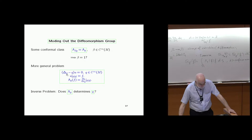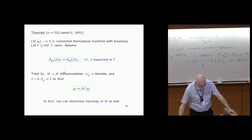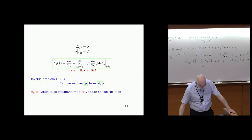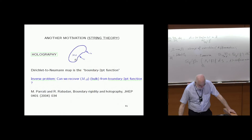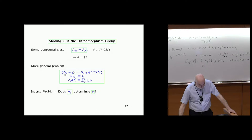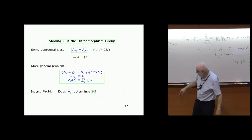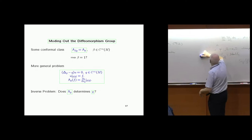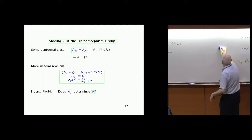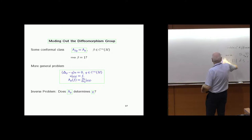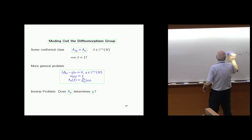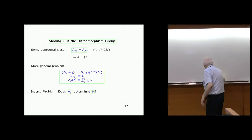This is the case we considered when G is the identity metric — this is isotropic conductivity. You can reduce it to the potential problem with a different Laplacian, the Laplace-Beltrami operator, which is invariant. This is another inverse problem — let me write it as conjecture seven, which is an easier problem, but even that we don't know how to do in dimension three or higher.